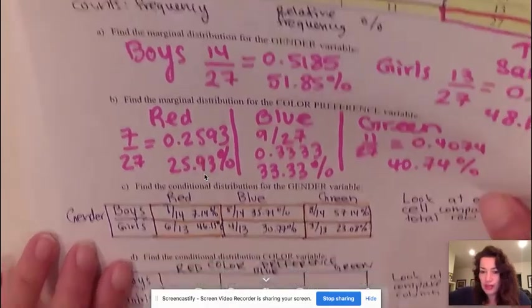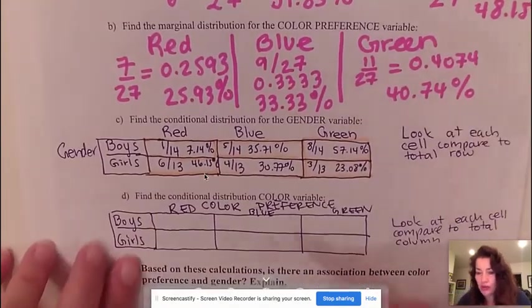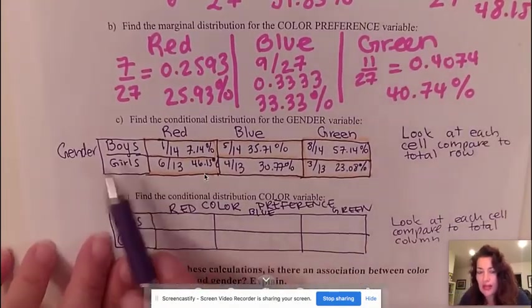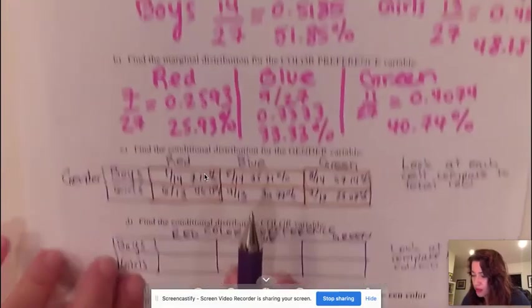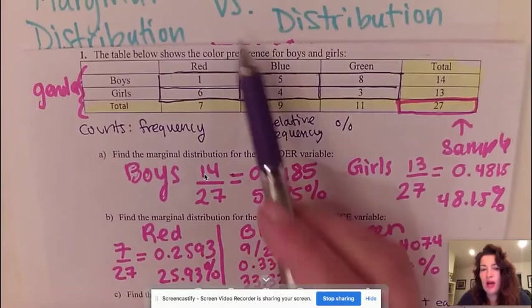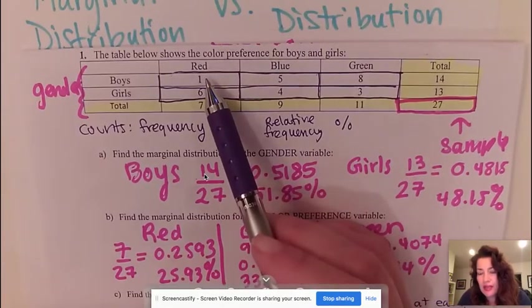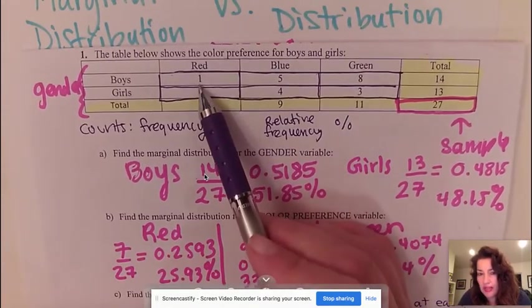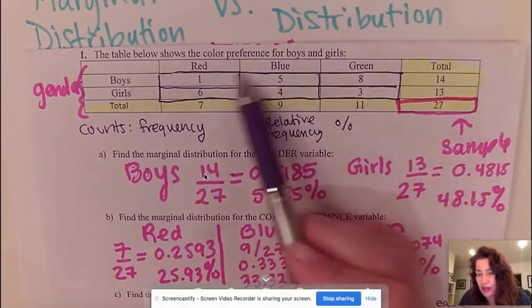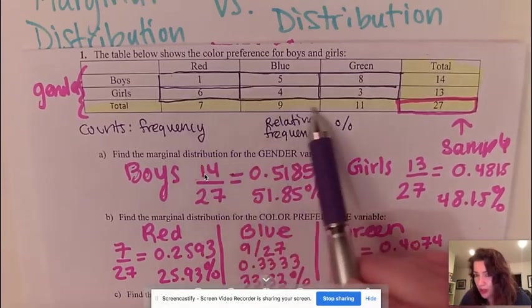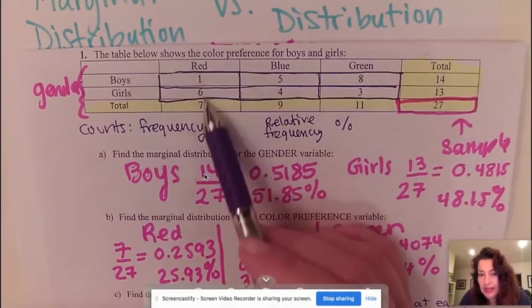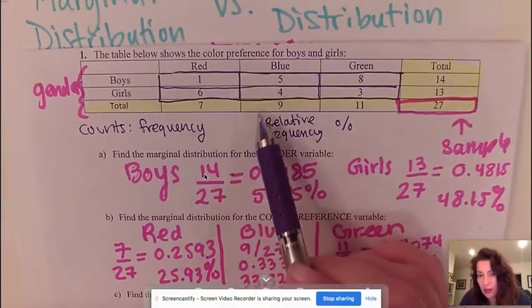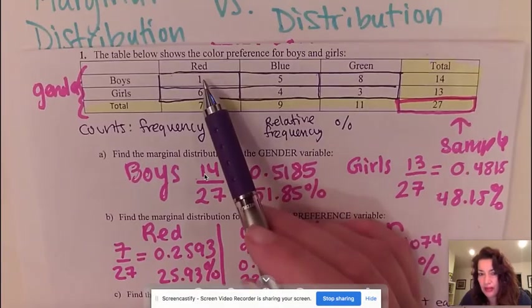I want to do the conditional distribution for color. I'm going to do the same thing, except instead of looking at the rows, we will look at the columns. So going back to the columns, I'm going to look at every cell. So remember the cells are everything in your table, but not including your margins.